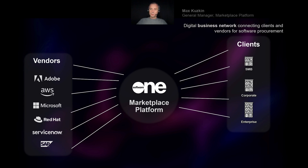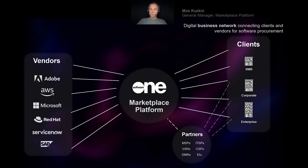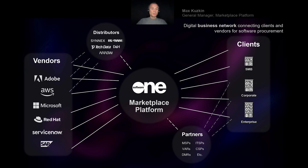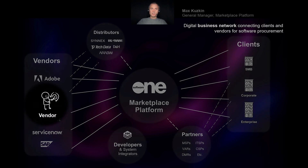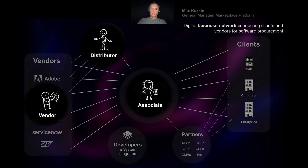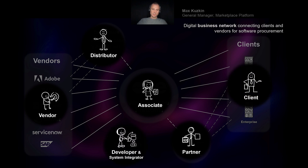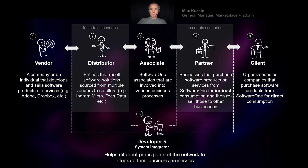We have our clients — those companies and enterprises that we work with. In addition, we work with partners who help us serve certain clients better than we could ourselves. We also work with distributors to procure software in cases when we can't establish a direct relationship with vendors. And we have relationships with developers and system integrators who help build integrations across all layers of this business network. So the six primary actors are: vendors, distributors, our own SoftwareOne associates who administer the network, partners, clients, and developers and system integrators.